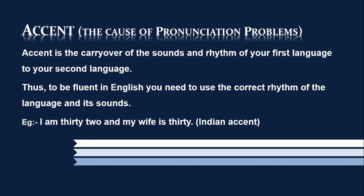Let me share one of my funniest encounters while teaching at the university here in Ethiopia. One of my colleagues is Indian, and at a certain program he came with his wife and wanted to introduce her to us. He started by saying: 'I'm thirty-two and my wife is thirty.' We laughed out loud. The problem is that in the Indian language there is no 'th' sound, so there's a carryover from his own language to English. Instead of saying 'thirty-two' and 'thirty,' he said 'dirty two' and 'dirty.'